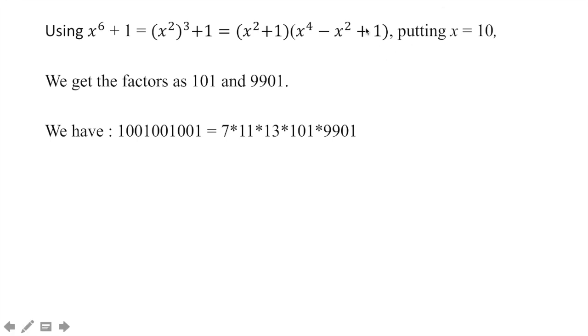But if you see 9901, it is really close to 10,000. So if you multiply these factors, you are going to get a number which is definitely greater than 10,000.